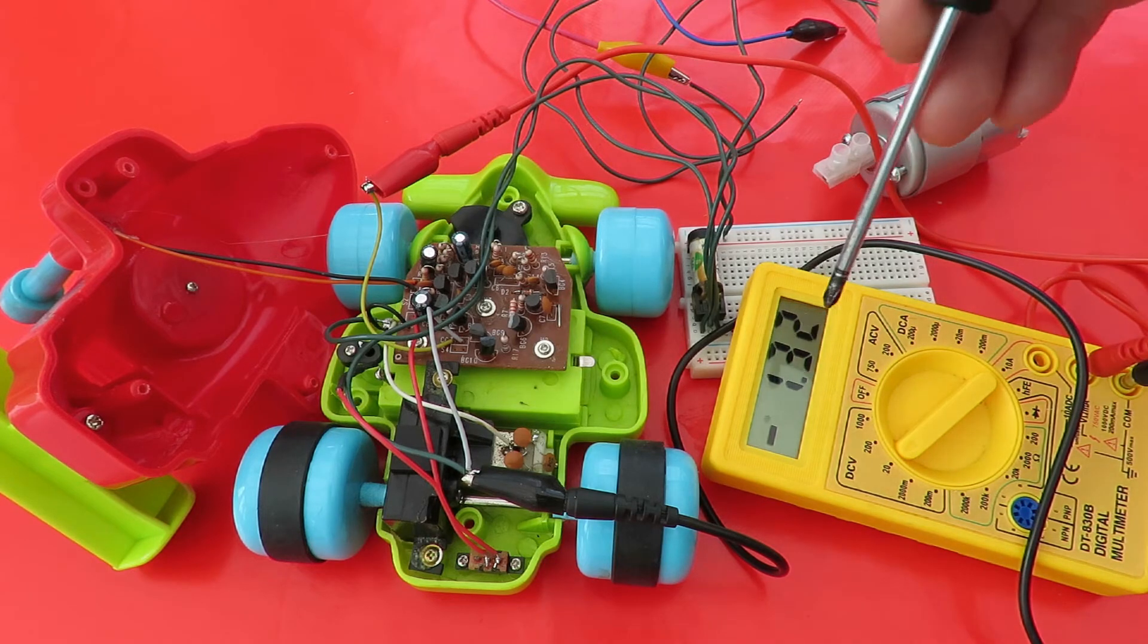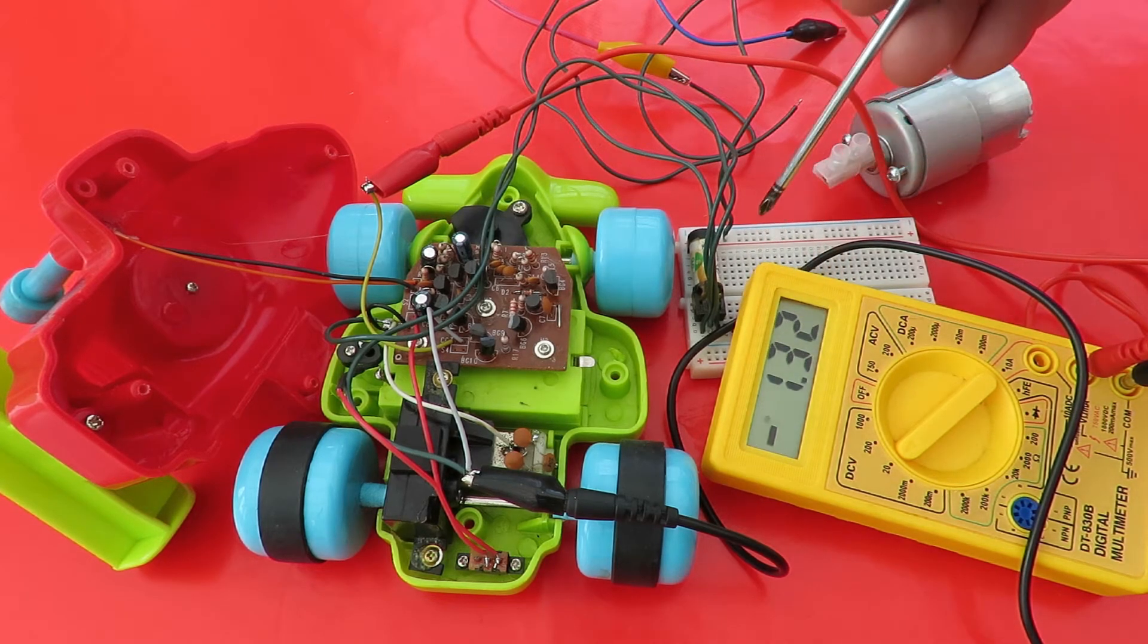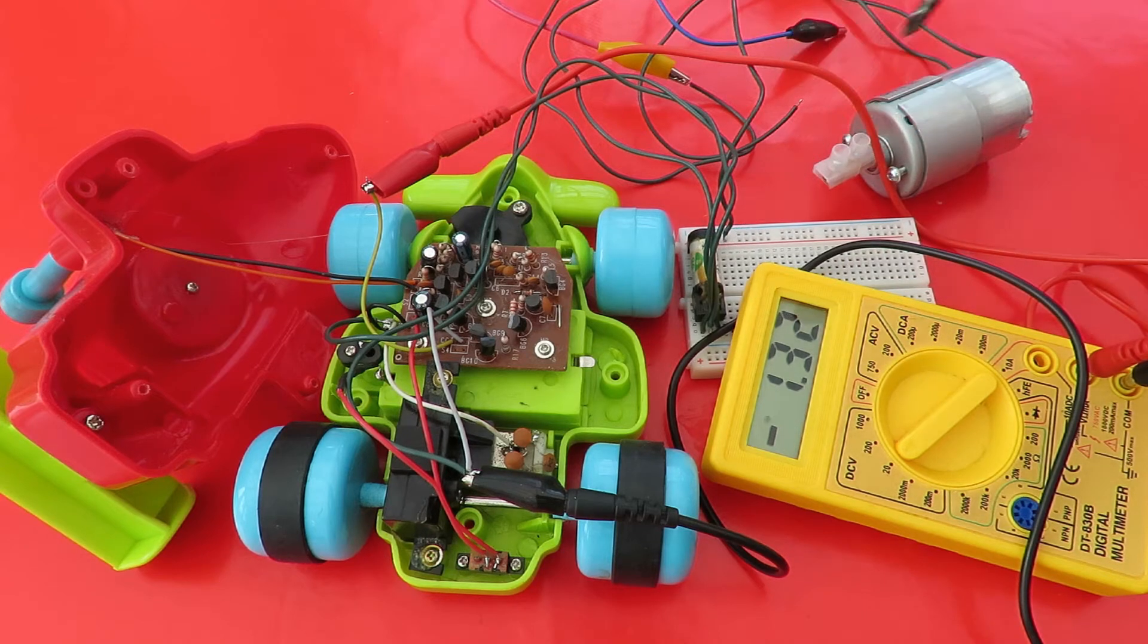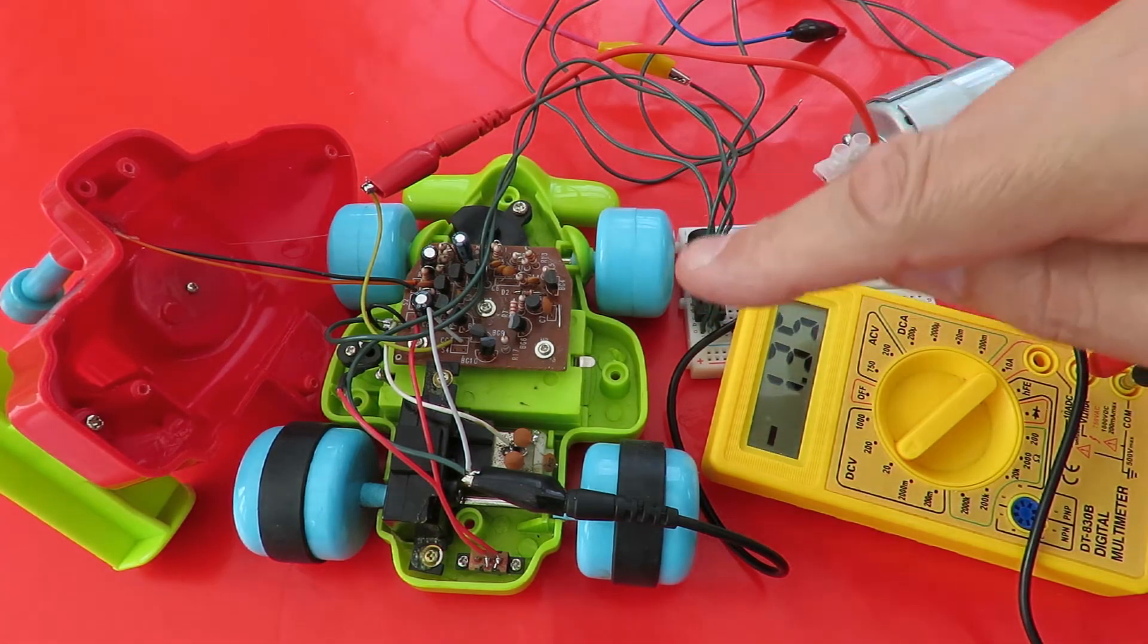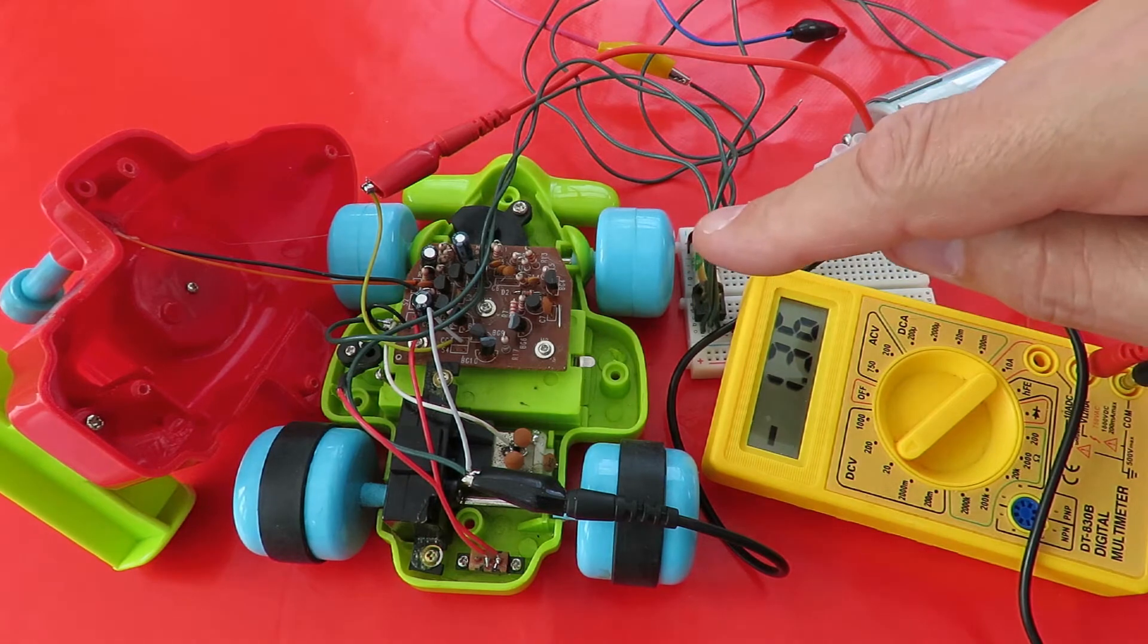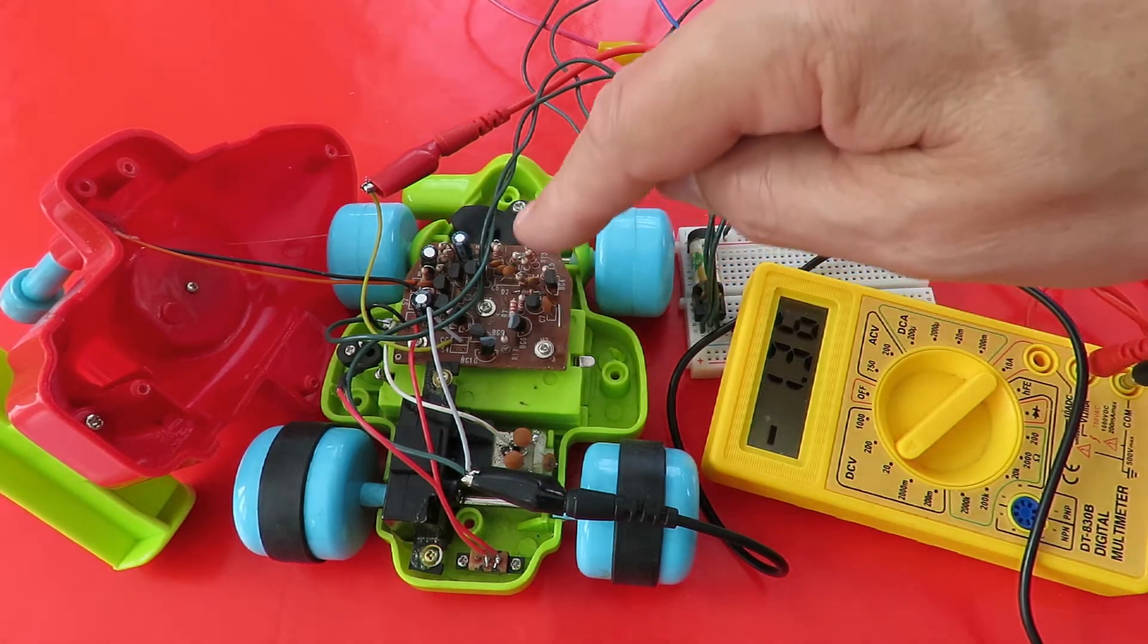Now it's only dropping to 1.3. I think that's because I've also got my relay in circuit. Now, one thing you will notice is there's no off position, which seems a bit odd, because the car did stop at times.